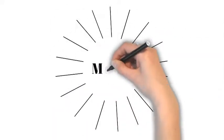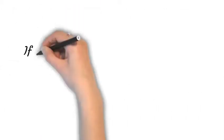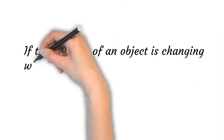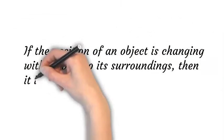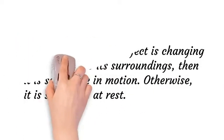Let's learn about motion. If the position of an object is changing with respect to its surroundings, then it is said to be in motion. Otherwise, it is said to be at rest.